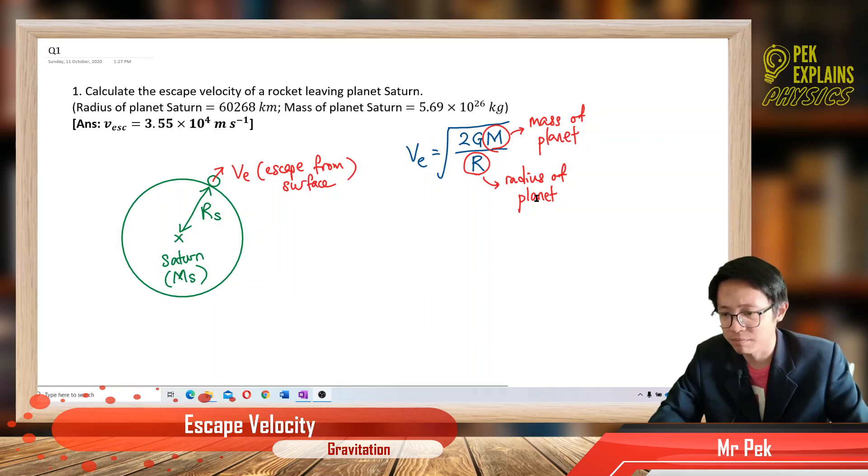And then this one is using radius of planet because the object is on the surface of the planet. You want to escape from the surface of the planet. So the surface to the center of the planet Saturn is the radius of Saturn. That's why the R is the radius of the planet because you want to escape from the surface.